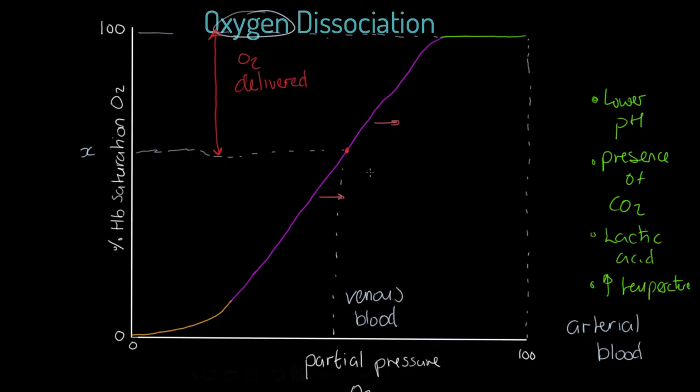Now the point I want to make to you about all of those is that these factors, what they do is effectively they shift our curve to the right. So if I now draw this curve we might get something slightly different. We might now get something like this: my curve now comes like this, it comes up and then it goes in here.